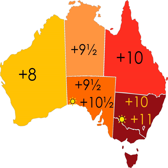The change to and from DST takes place at 2 am local standard time on the appropriate Sunday. Until 2008, DST usually began on the last Sunday in October and ended on the last Sunday in March. However, Tasmania, given its latitude further south, began DST earlier on the first Sunday in October, and ended it later on the first Sunday of April.